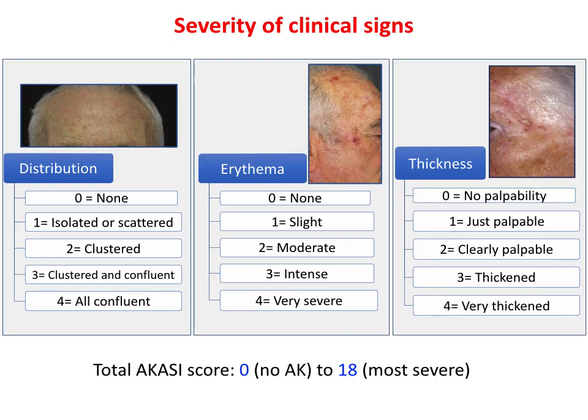Then, the severity of three clinical signs of AK — that is distribution, erythema, and thickness — are assessed on a scale from 0 to 4. The total ACASY score may range from 0 to 18, where 18 is the most severe possible degree.